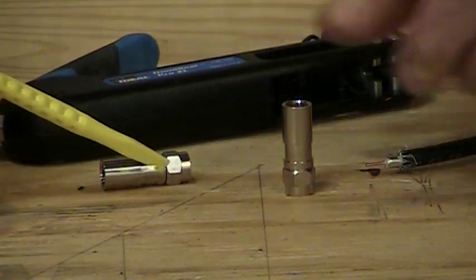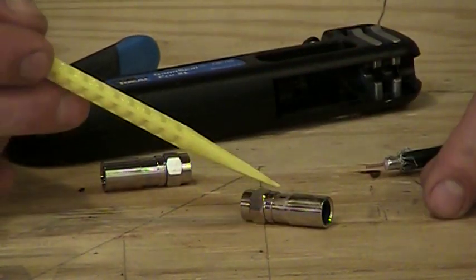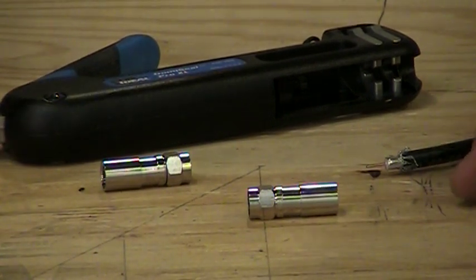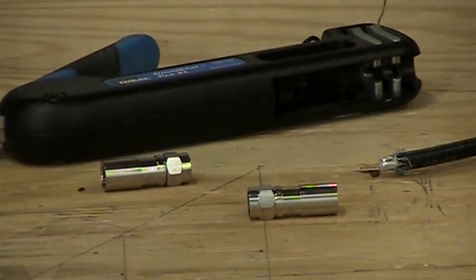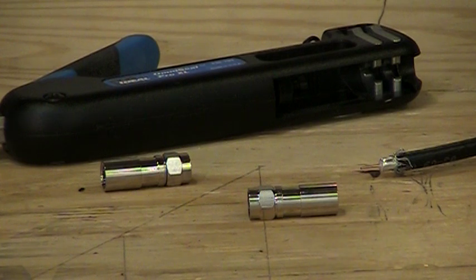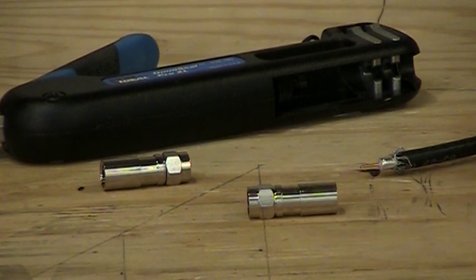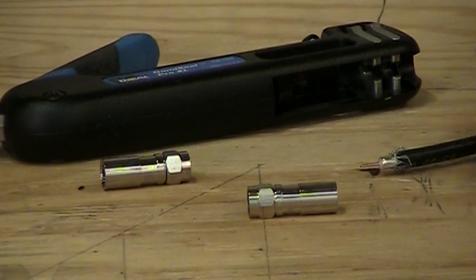Now, the connector we have in front of us here is called a universal RG6. It will work with RG6, it would work with quad shield, and it would also work with something called tri-shield coax, which is a coax with a foil, a braid, and an extra layer of foil, or quad is foil braid, foil braid.